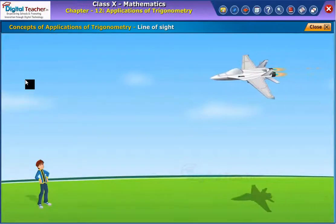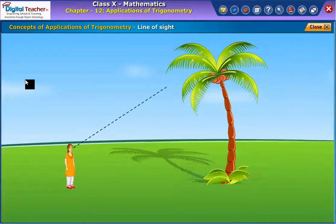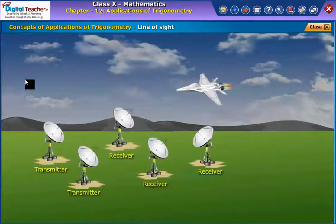Here an imaginary line joining the child's eye to the plane in the sky is called the line of sight. Some other examples of line of sight from our daily life situation are: a girl looks at the top of a tree, transmission of a signal from the transmitter to the receiver, etc.